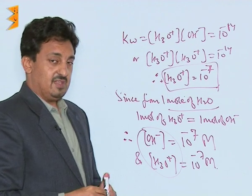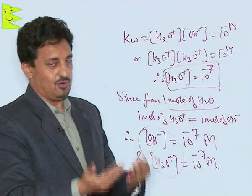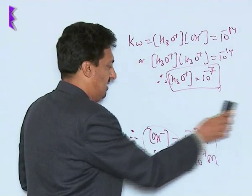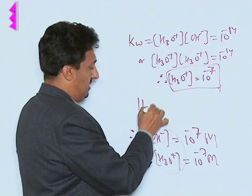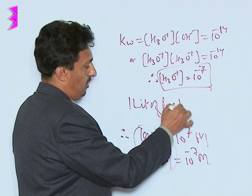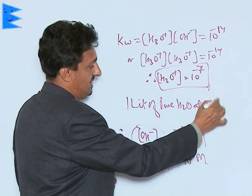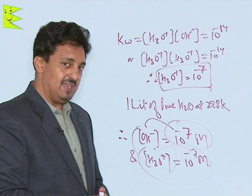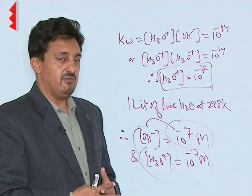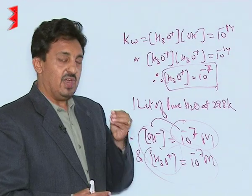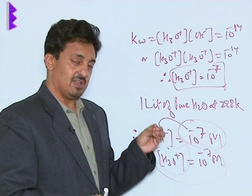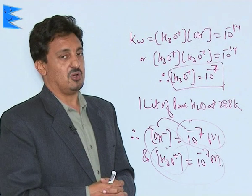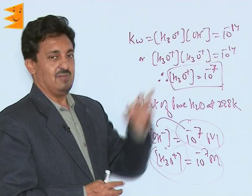So this is how we get the concentration of the H⁺ ion, the hydronium ion, and the OH⁻ ion in pure water. As these values suggest, if we take 1 liter of pure water at 298 Kelvin, it is going to have this much OH⁻ ions and this much H⁺ ions. So the water we drink, regarded as pure water, will have very, very small concentrations of H⁺ and OH⁻ ions — 10⁻⁷ each — and their product is the ionic product of water, Kw, which is always 10⁻¹⁴.